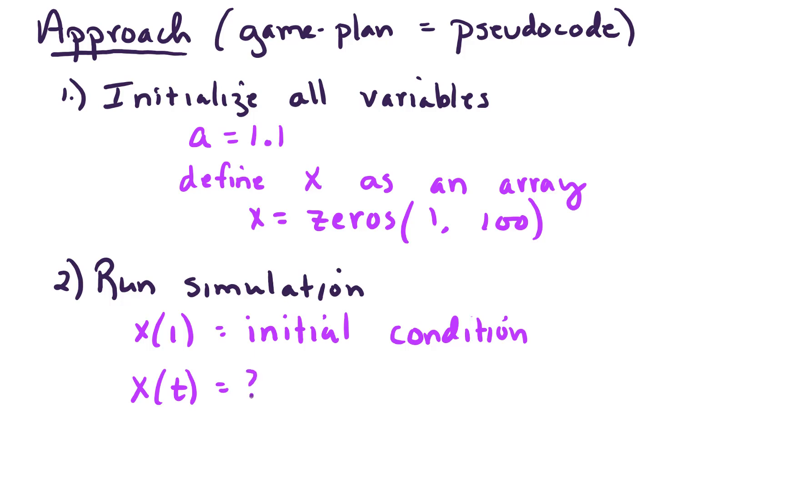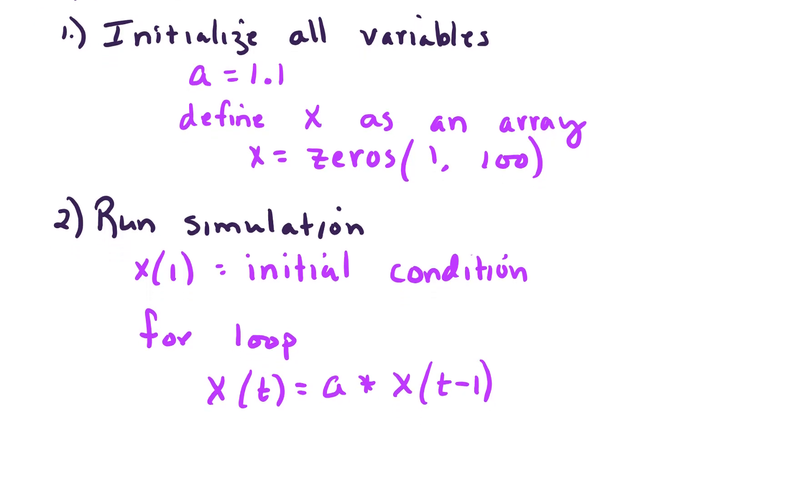And then we need to determine what is x sub t. Well, we know what that is from our model. So we will need some sort of for loop to define that our next value of t, or our current value of t, is a times whatever the previous value of t is. So we'll need some sort of for loop.